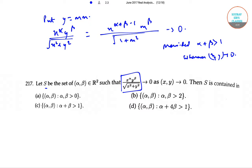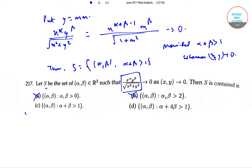Option A is incorrect as S can contain negative alpha and beta. Option B is also incorrect as it can contain negative alpha and beta, and also 0 and 1. Option C is the correct answer.